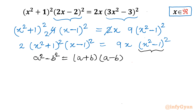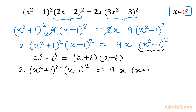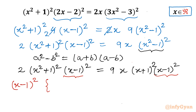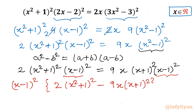We apply the difference of squares identity to the right-hand side. So on the left: 2(x² + 1)²(x - 1)². On the right: 9x × (x + 1)²(x - 1)². You can see (x - 1)² appears on both LHS and RHS. Take all terms to one side and factor out (x - 1)²: (x - 1)² × {2(x² + 1)² - 9x(x + 1)²} = 0.